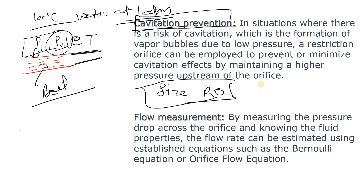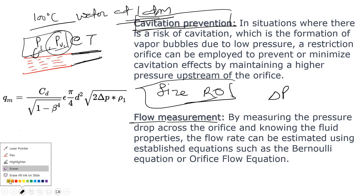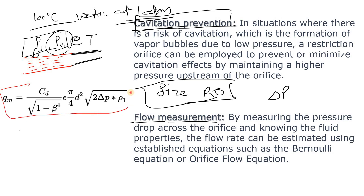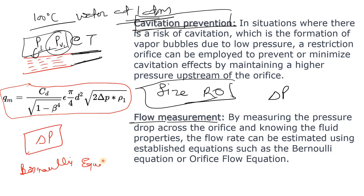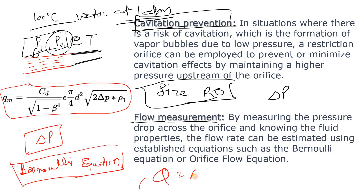Also, as you are creating a delta P across the RO, you can use it to find out the flow rate. The formula — which we studied in undergraduate classes — is derived from Bernoulli's equation, the same as used in a venturi meter or orifice plate. With Bernoulli's equation and the continuity equation Q = A×V, you can derive the equation for flow measurement when delta P is known.